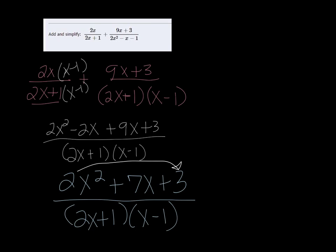So 2x squared times 3 is 6x squared. Are there any factors that are going to add up to 7x? 6x and 1x. If I add those together, I get 7x. So we can factor this.